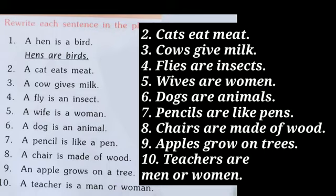'A chair is made of wood' changes into 'Chairs are made of wood'. Note that since wood is an uncountable noun, there is no plural form of it. In the ninth one, apple and tree, and in the tenth one, teacher, man, and woman are countable nouns, so we use their plural forms. Hence the ninth answer is 'Apples grow on trees' and the tenth answer is 'Teachers are men and women'.